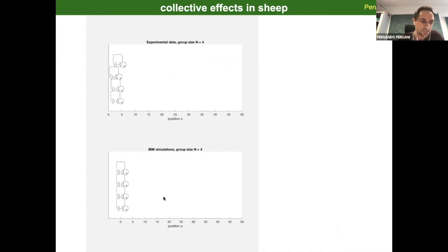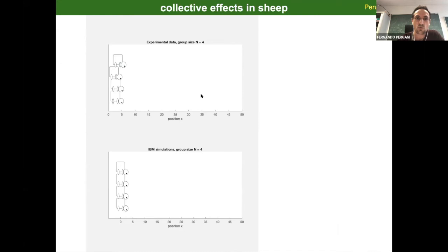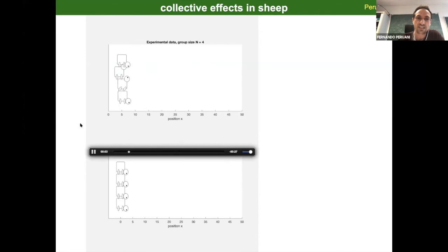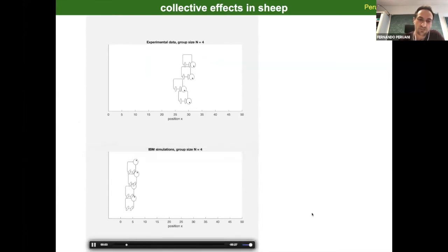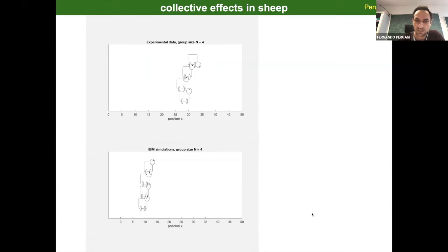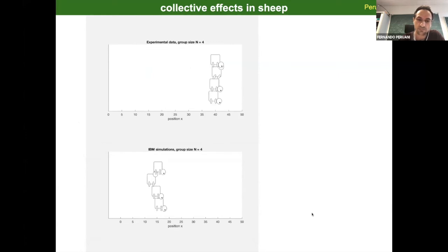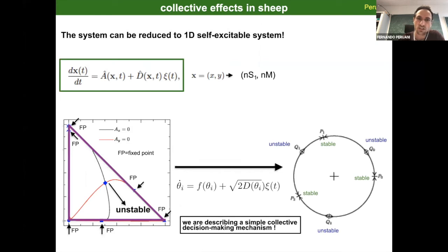We can plug these transition rates into an equation of motion that describes how they move in space, in a very similar fashion as we did with bacteria — again the equation of motion depends on the behavioral state. Here is the result: in the experiments you see head-down periods, head-up periods, and suddenly a collective motion phase. If you run the same with the model, you obtain a very similar behavior — again the head-up, head-down transitions, and then a collective motion phase.